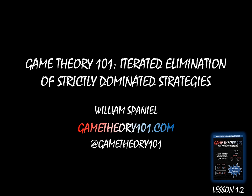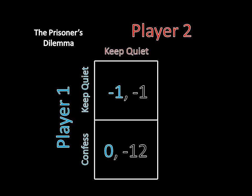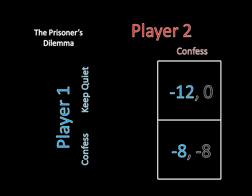Remember in the last video we looked at the Prisoner's Dilemma, and the solution to this game was for both players to confess. The reason for that is confess strictly dominated keep quiet. Keep quiet was a strictly dominated strategy — it was never in the player's best interest to individually keep quiet. Confess always produced a better outcome than keep quiet. For example, with Player 1, if Player 2 were to keep quiet, then Player 1 should confess because 0 is greater than negative 1. And if Player 2 were to confess, then Player 1 would still want to confess because negative 8 is better than negative 12.